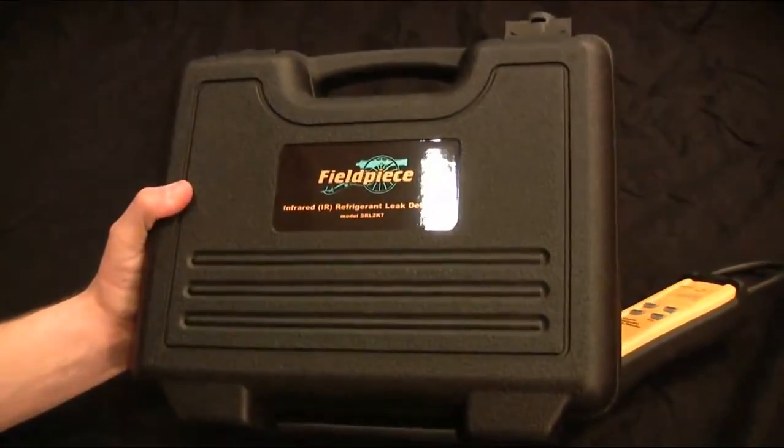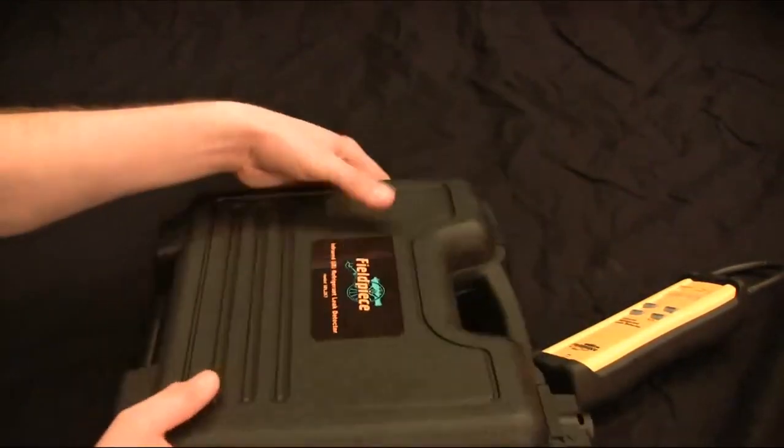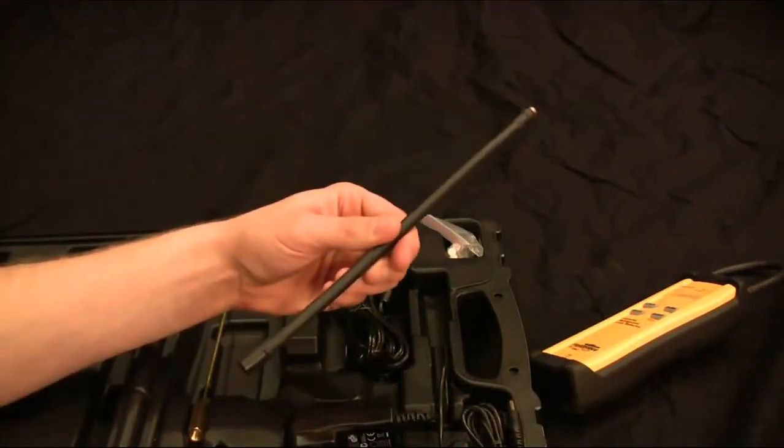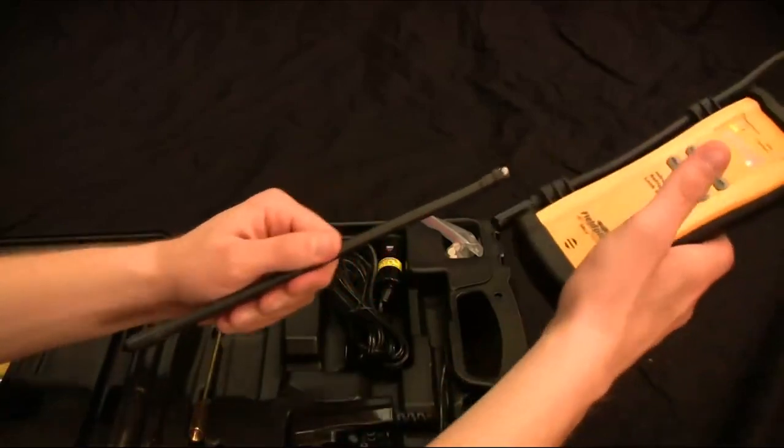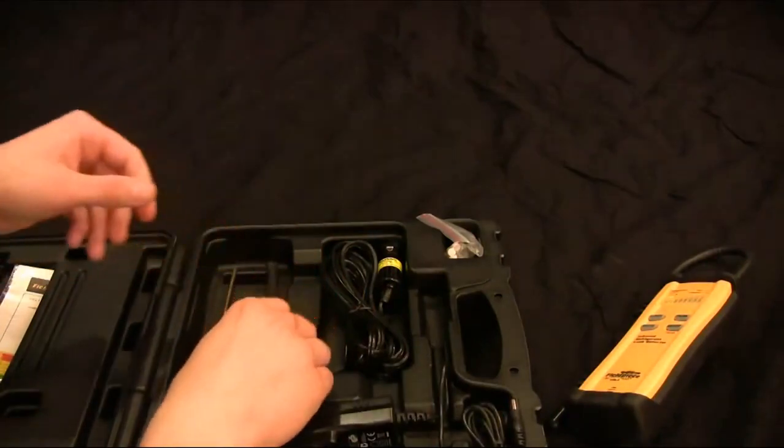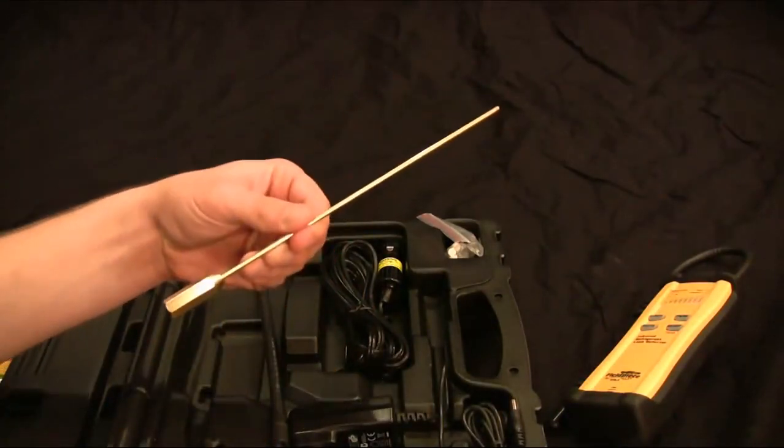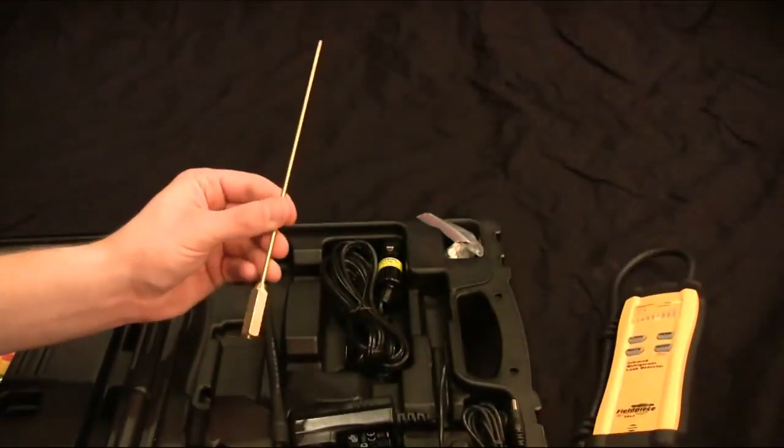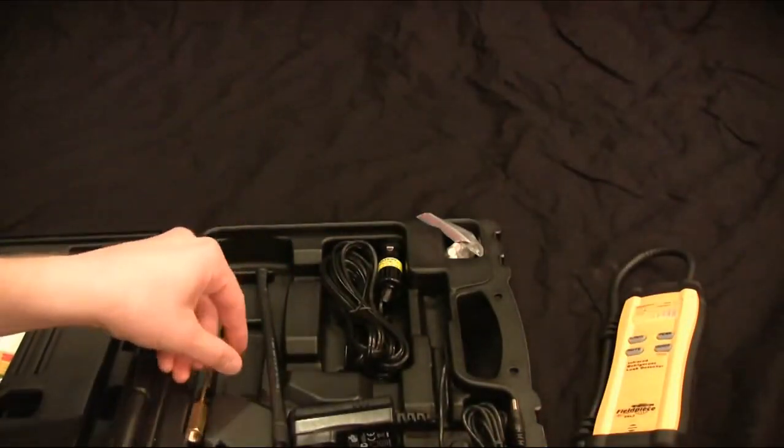So first it comes in this nice blow molded case. We have an extension wand you can add to the tip of the SRL-2 just to give you a little bit of extra reach. We also have a needle nose tip that you can add to the tip of the wand just to get into condenser fins or tight spots.